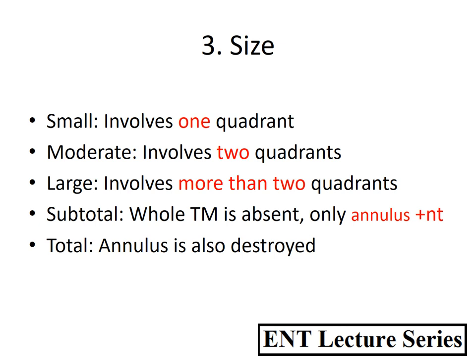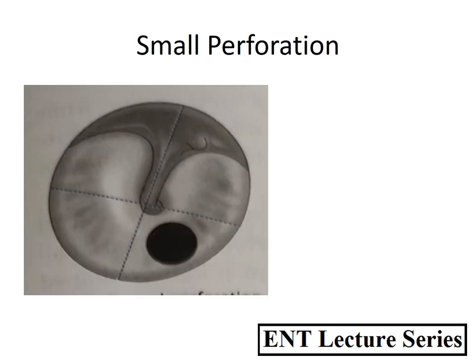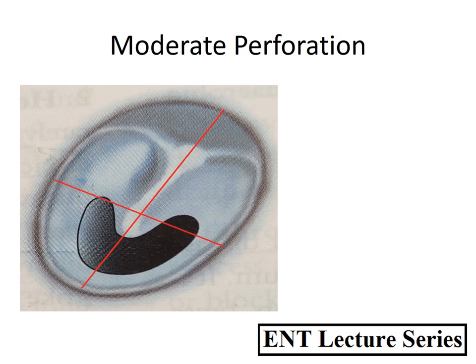Depending on size, the perforation can be small, moderate, large, subtotal, or total. There is no exact measurement method; this is a clinical division based on the number of quadrants involved. A small perforation involves one quadrant, moderate involves two quadrants, large involves more than two, subtotal means the whole tympanic membrane is absent but the annulus — the outer fibrocartilaginous ring — is present, and in total perforation even the annulus is destroyed.